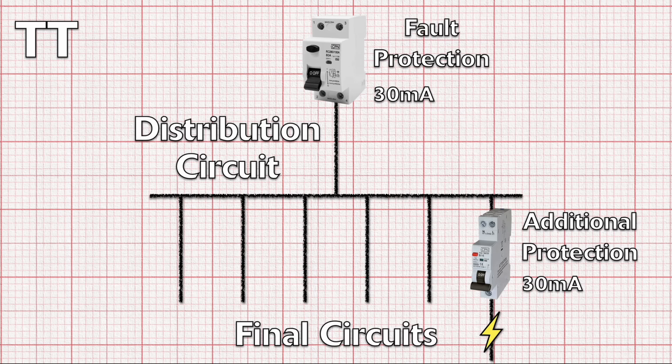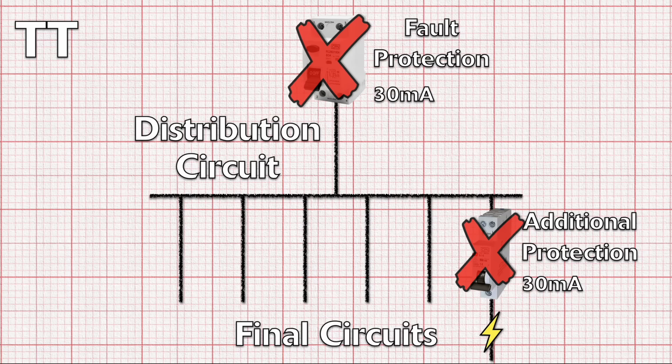An earth fault on the final circuit will cause the RCDs protecting the final circuit and the distribution circuit to trip at the same moment thus disconnecting healthy circuits. So what's the solution?